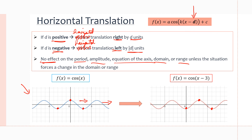You can see the period stays the same — it's still six, just as before. Amplitude stays the same at one. Equation of axis is still zero, domain is still all real numbers, and range is still from negative one to one.